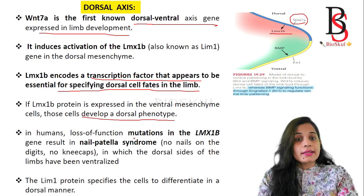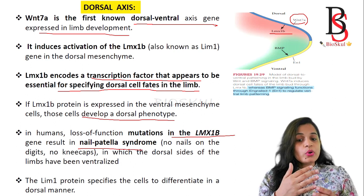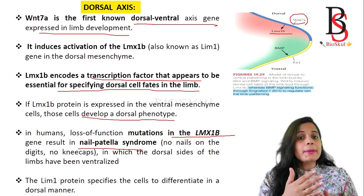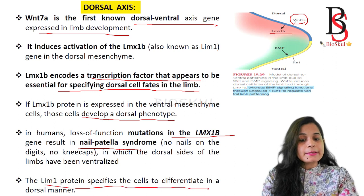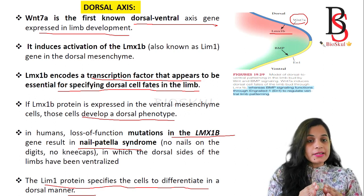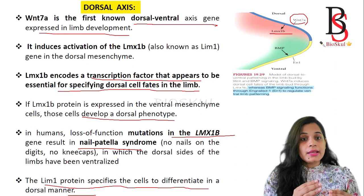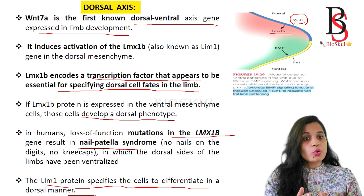In humans, loss of function or mutation of the Lim1 gene results in a syndrome known as nail-patella syndrome, in which there are no nails on the digits and no kneecap — the dorsal side of the limbs has been ventralized. From this it is concluded that Lim1 protein specifies cells to differentiate in a dorsal manner. So: Wnt7a is expressed in the dorsal ectodermal region, which induces Lim1 protein expression in dorsal mesenchymal cells, and Lim1 acts as a transcription factor that drives dorsal limb axis formation.